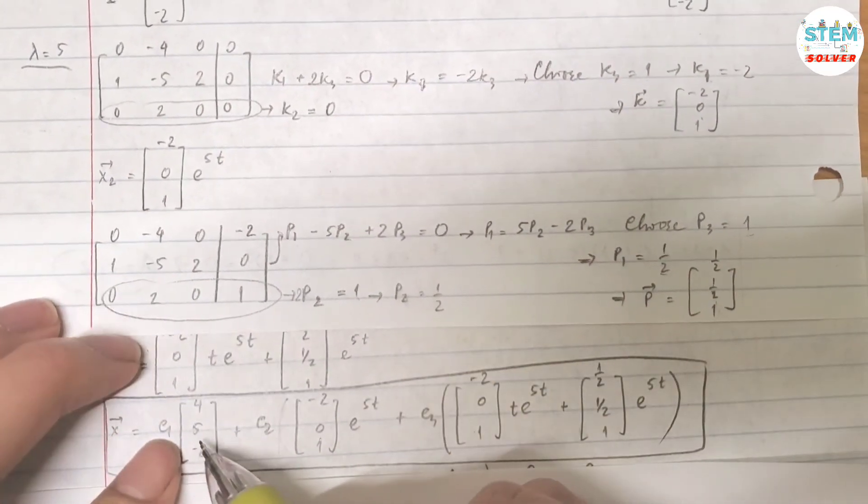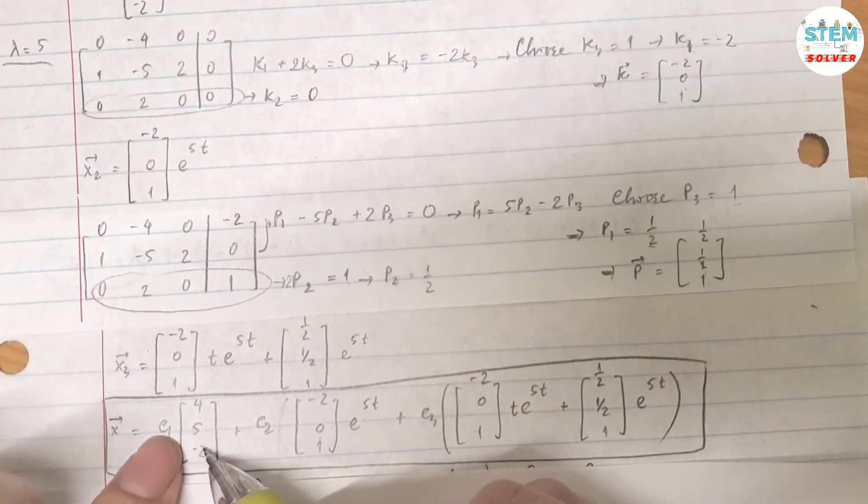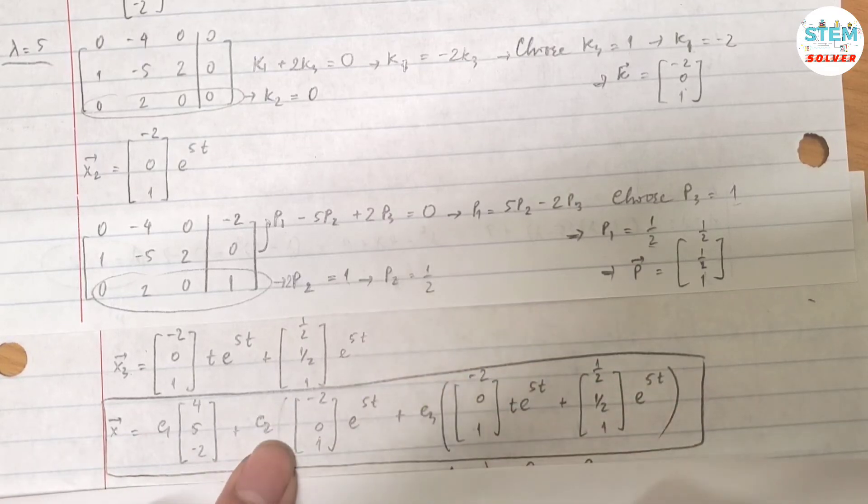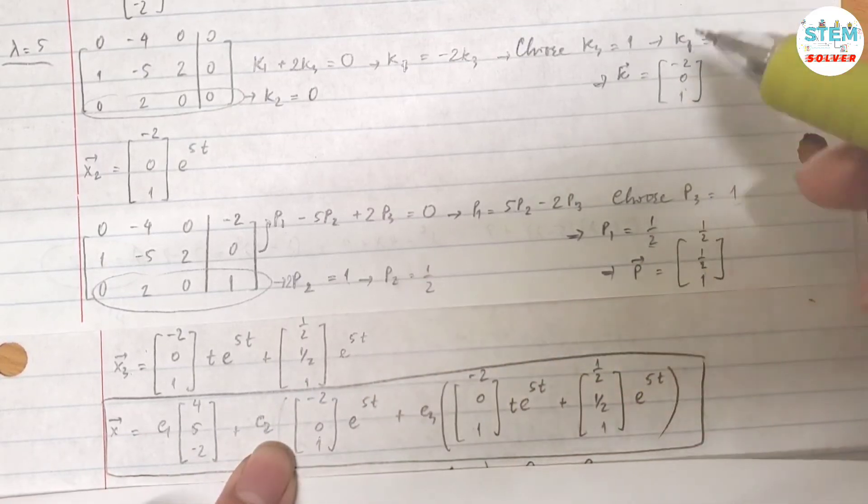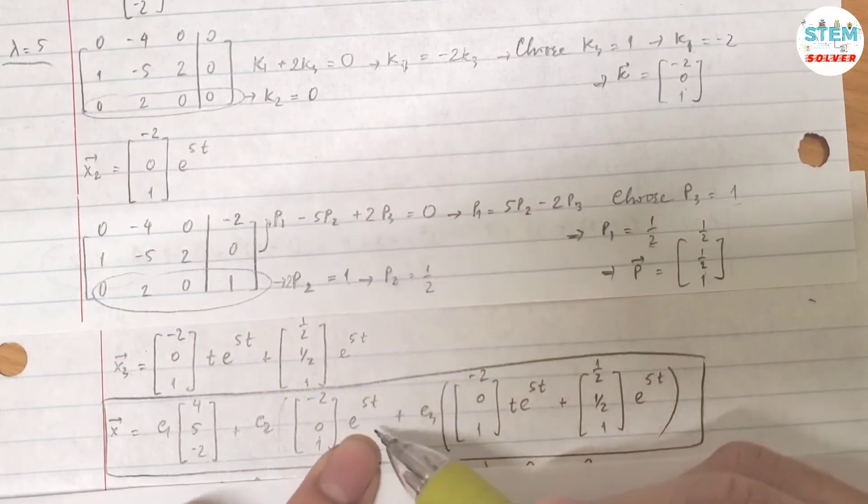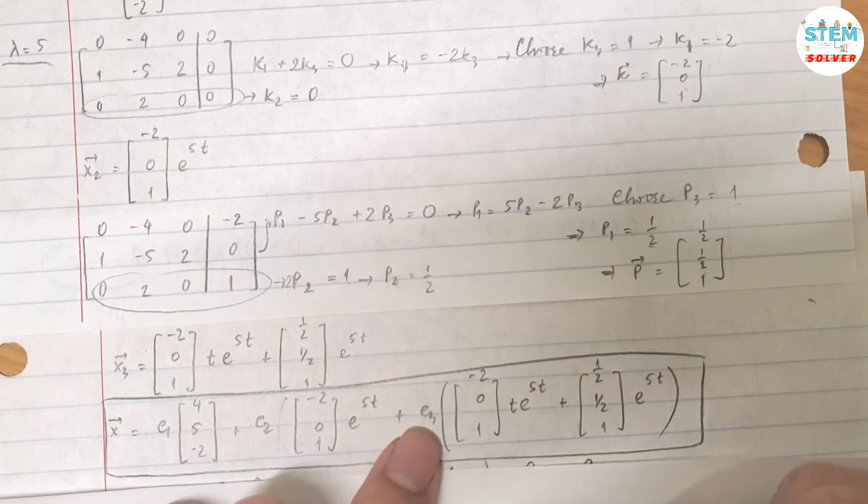So I have C1 times this one and my lambda is 0, so I have C1 times this vector times e to the 0 which is 1, plus C2 times this vector times e to the lambda t. And in this case lambda is 5 so I have e to the 5t, plus C3 times